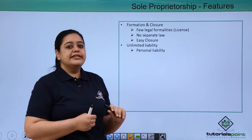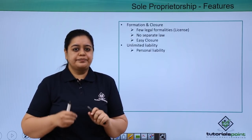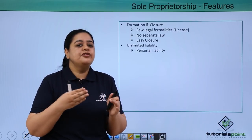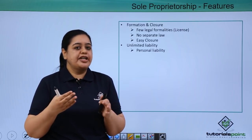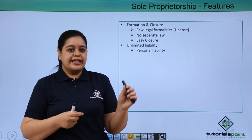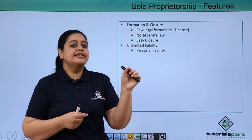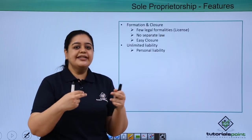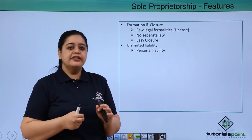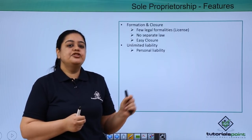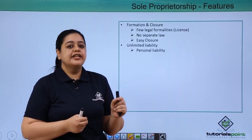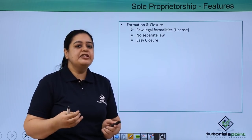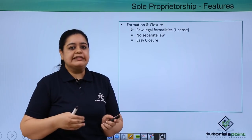The second feature is unlimited liability. Suppose Rama's kitchen doesn't do well and she goes into losses, deciding to wind up. She has to pay her creditors — say the amount due to creditors is ₹80,000, but the business assets and money she has is only ₹50,000. There is an excess ₹30,000 that needs to be paid. In sole proprietorship, Rama will have to pay from her personal income or personal savings because she has unlimited liability.